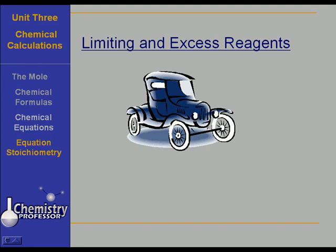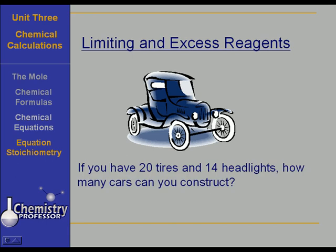Look at this old car. Suppose you were on an assembly line, you and a friend of yours, building cars. And you have 20 tires, and your friend has 14 headlights. How many completed cars could get past the two of you, the last two in line, in this assembly process?